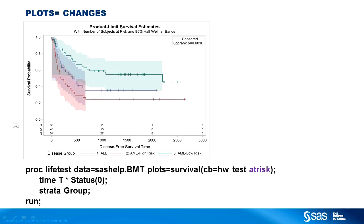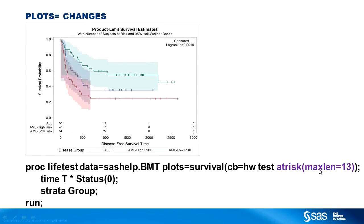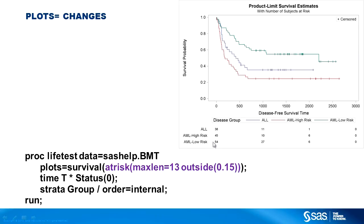You may wonder why the actual values aren't shown. By default, labels are displayed up to 12 characters, but the longest label here, 'AML High Risk', is 13 characters. So if I want to see the labels, I need to specify a maximum length of 13 — and now I see the labels, and the 1s, 2s, and 3s are gone from the legend. I can also move the at-risk table outside using the outside option, and here I'm reserving 15% of the vertical space for this table. ProcLifeTest will pick a value automatically, but you can control how much space is available.